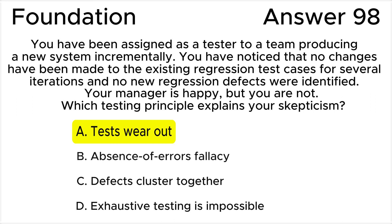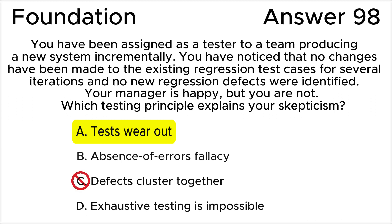All the rest of the answers are wrong. Answer B is invalid because this principle is about the mistaken belief that just finding and fixing a large number of defects will ensure the success of a system. Answer C is invalid because this principle says that a small number of components usually contain most of the defects.